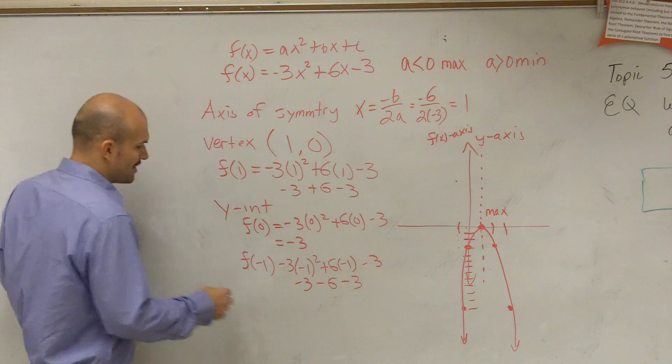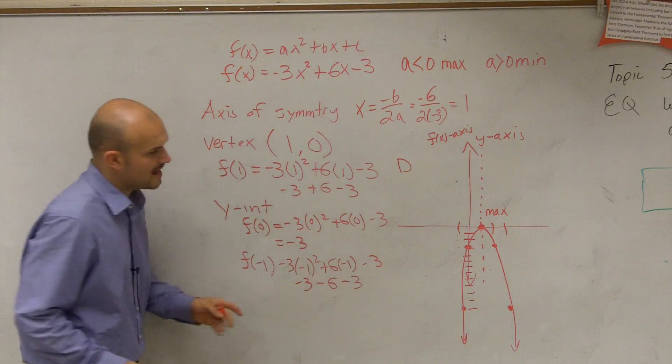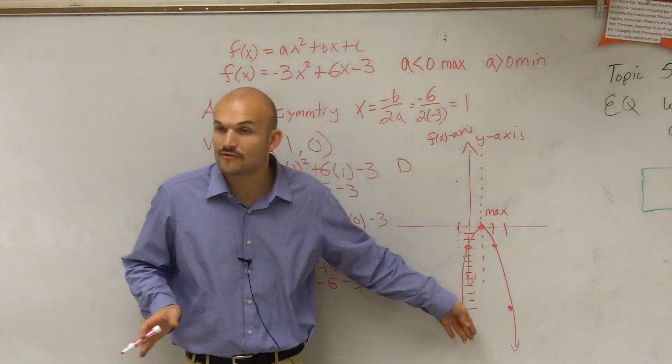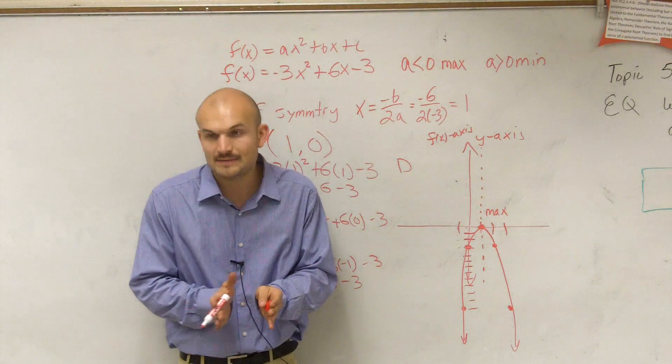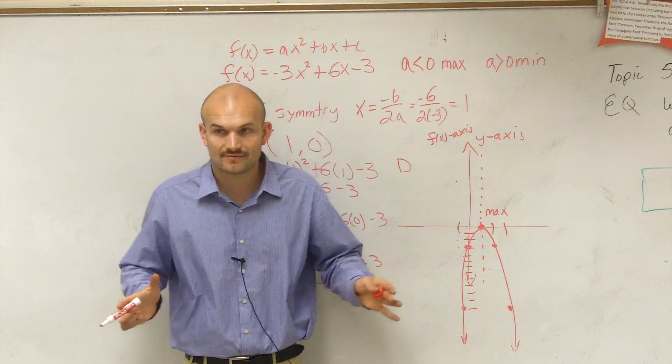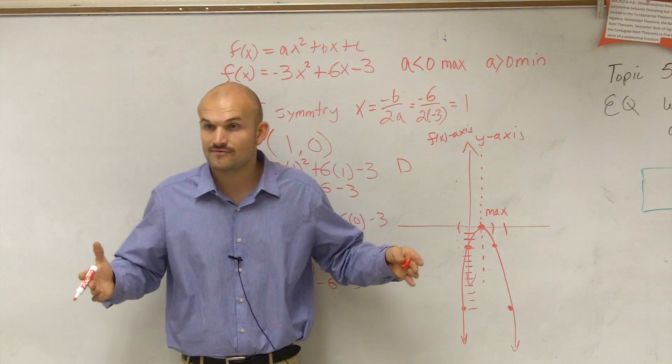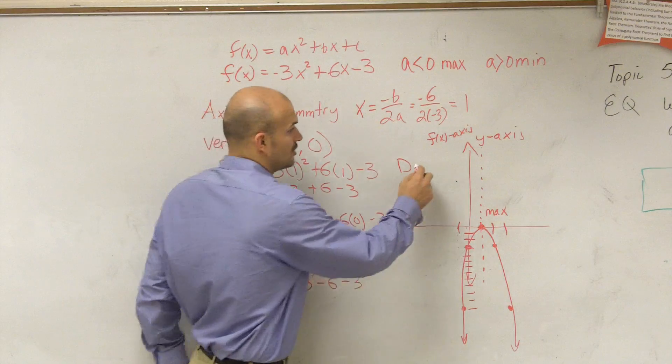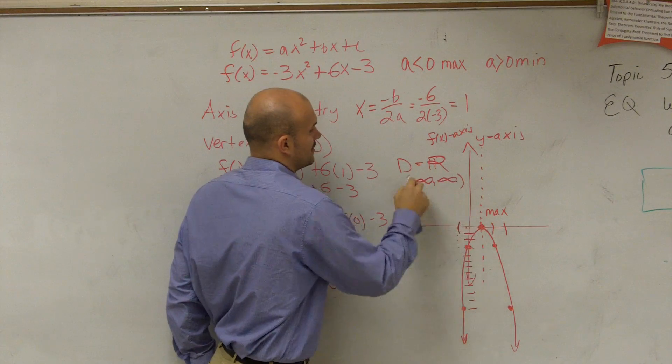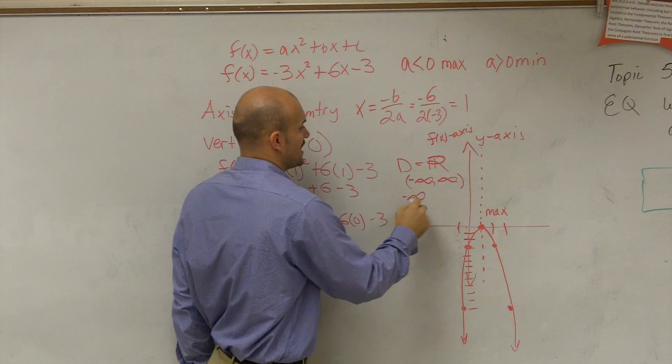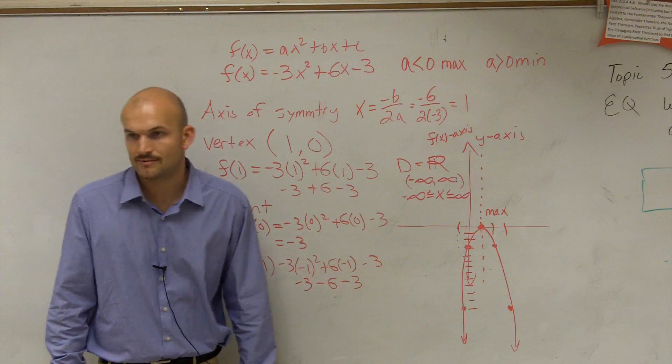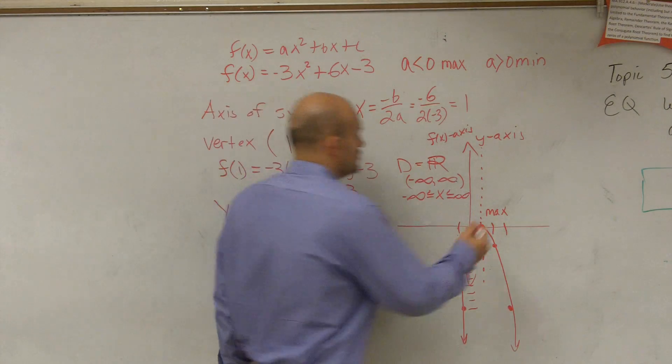So let's talk about domain and range real quick. So the domain. As you look at this graph, this graph is pretty skinny, but it's going to go down forever. Right? And as it's going to go down forever, it's going to keep on getting wider and wider and wider and wider. There's nothing that's going to stop it from getting wider and wider. So therefore, the domain is what we like to call all real numbers. From negative infinity to infinity. All values between negative infinity and infinity. Those are three different ways we can write domain, all right?